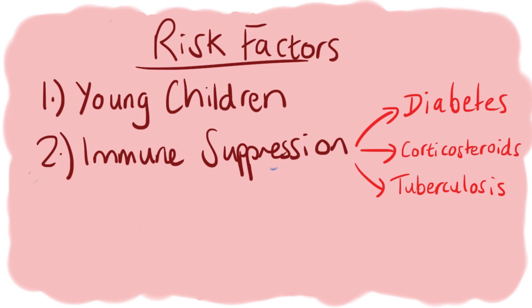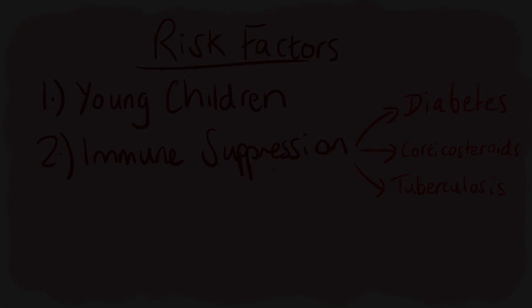Risk factors associated with osteomyelitis include young patients, especially children, because of increased blood supply to growing bones, allowing bacteria to reach the bone more easily. In older patients, osteomyelitis is likely due to immunosuppression — a reduced immune response — which can occur in diseases like diabetes, with use of drugs like corticosteroids, or in conditions like tuberculosis.